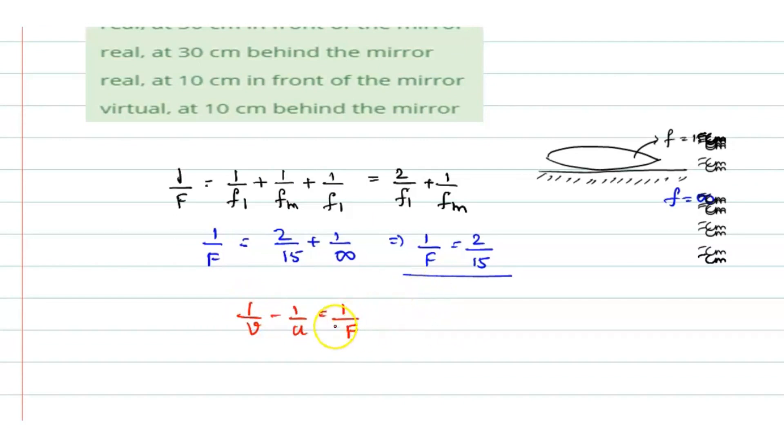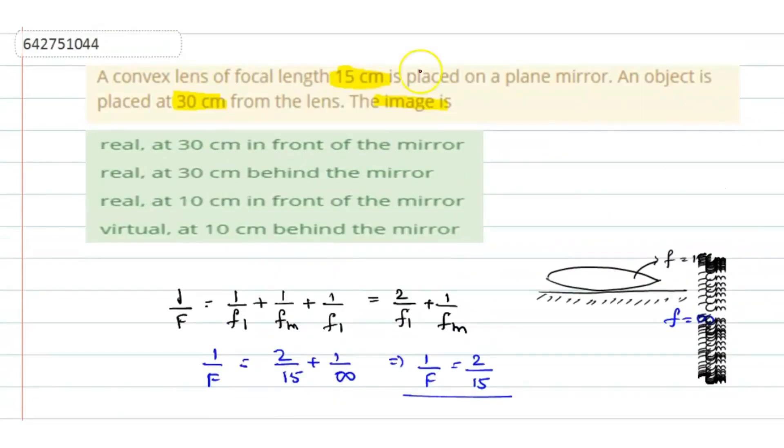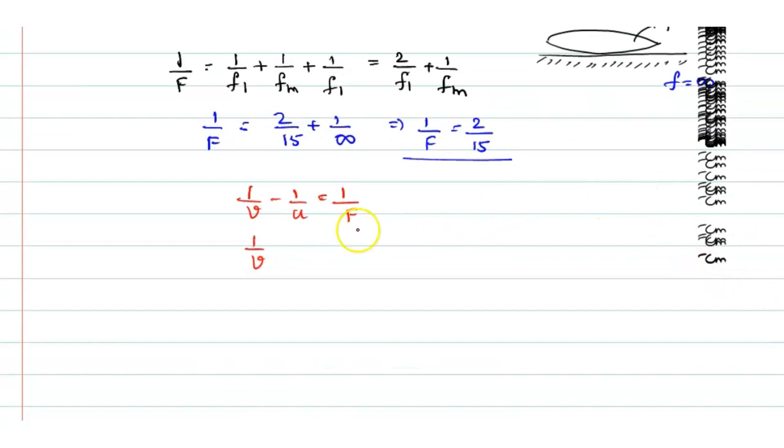Here we are finding out the image distance for the combination, so we are using the focal length of the combination. So we are supposed to find v. So 1 by v and object is placed at what distance? They have given object is placed at 30 centimeters from the lens. So minus 1 by 30 is equal to 1 by f value. You know it is 2 by 15.